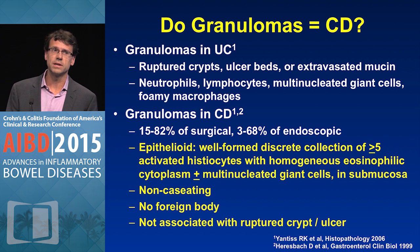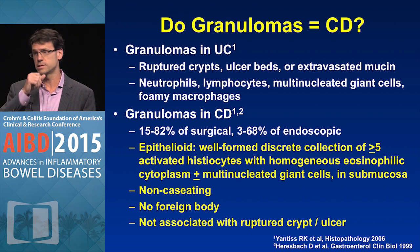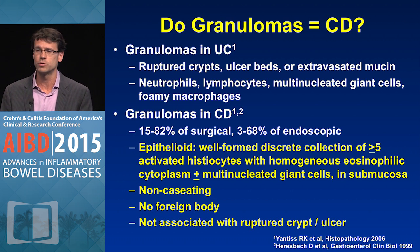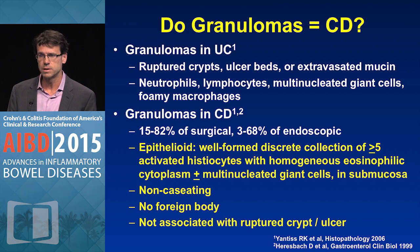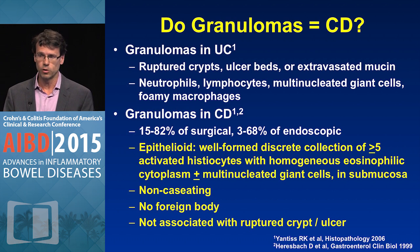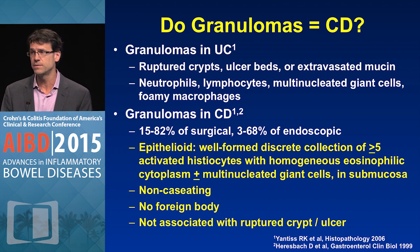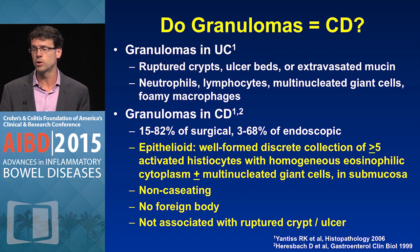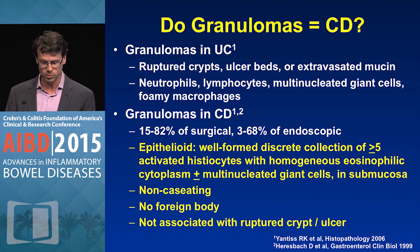The inflammatory cells you see in ulcerative colitis granulomas differ from those in Crohn's. In UC, they include neutrophils, lymphocytes, multinucleated giant cells, and foamy macrophages — sort of an admixture of various cell types. In Crohn's disease, one of the two pathological hallmark features is the epithelioid granuloma, defined as a well-formed discrete collection of five or more activated histiocytes with homogeneous eosinophilic cytoplasm — i.e., epithelioid cells — with or without multinucleated giant cells, and ideally located in the submucosa. These are non-caseating, there's no foreign body reaction, and they're not associated with a ruptured crypt or ulcer.